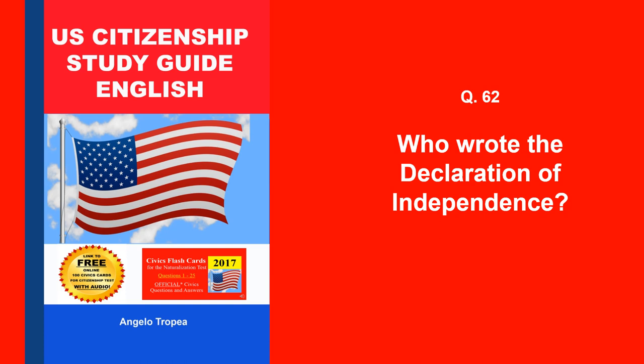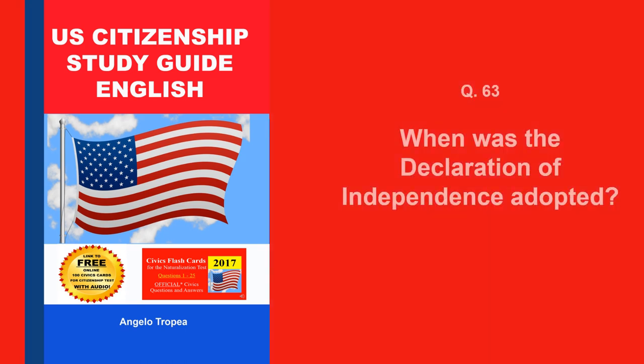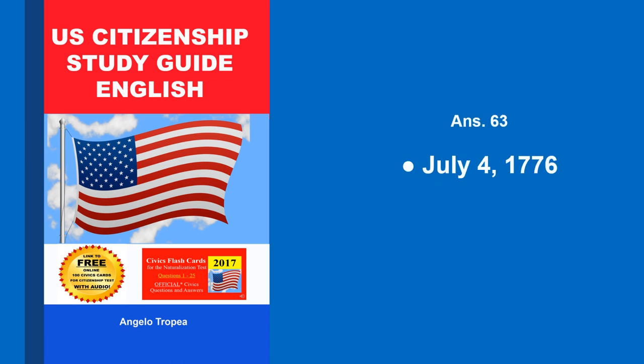Who wrote the Declaration of Independence? Thomas Jefferson. When was the Declaration of Independence adopted? July 4, 1776.